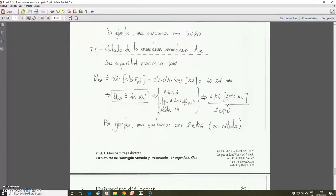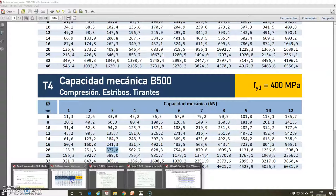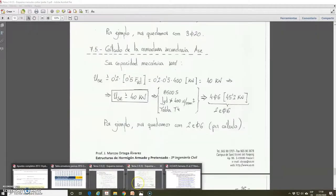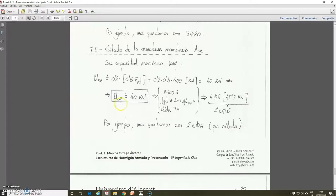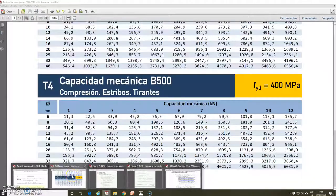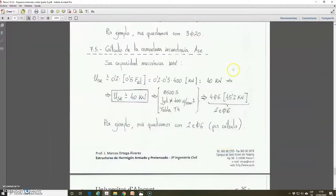We must take the number of bars and diameter from the table T4 for this type of steel. We have a mechanical capacity higher or equal than 40 kN. And one solution can be, for example, four bars of 6 mm of diameter, with a mechanical capacity of 45.2 kN.